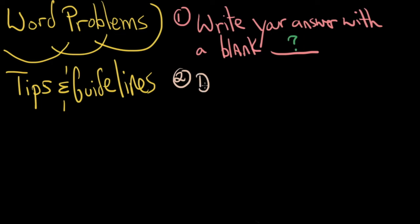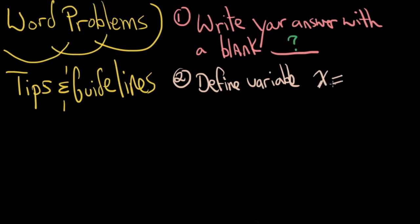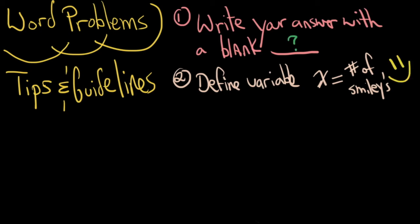Number two: you always need to define a variable. You're going to tell me what x means. So x is — I don't know — it's the number of smiley faces. You are going to tell me what it is. Make sure you're going and doing that. Define a variable.